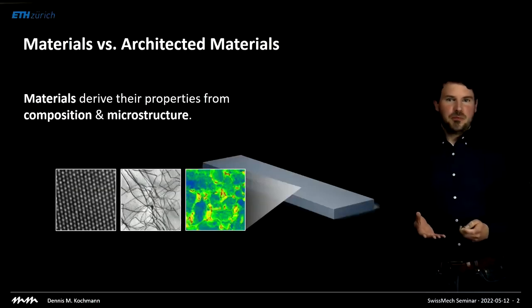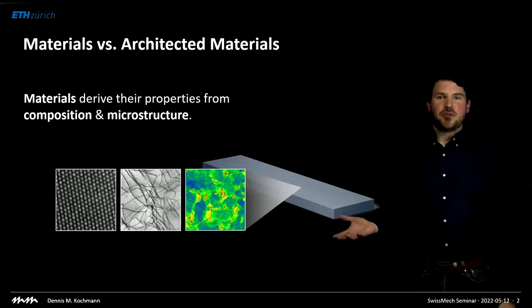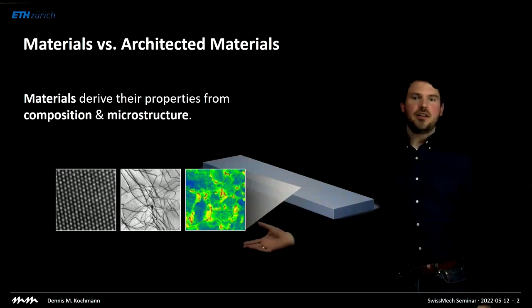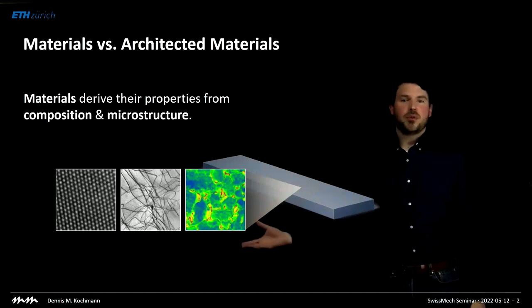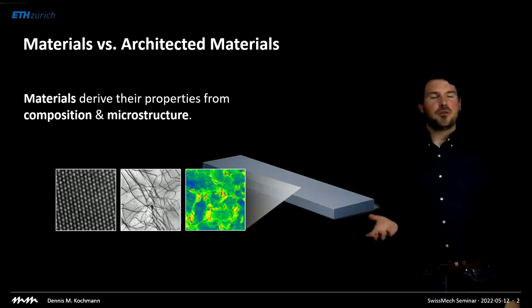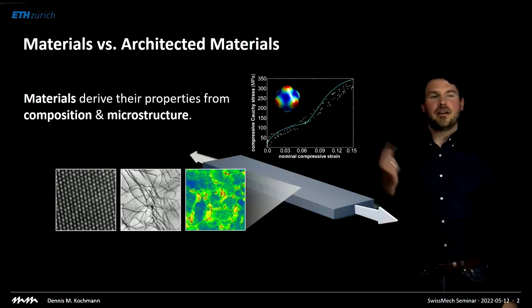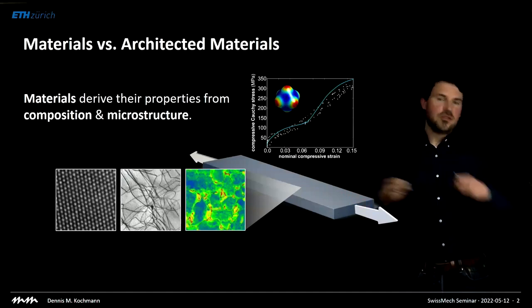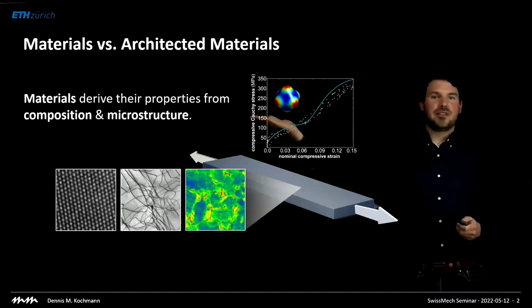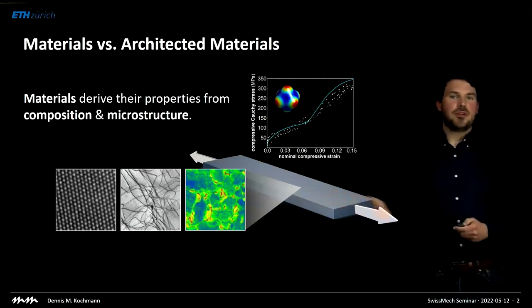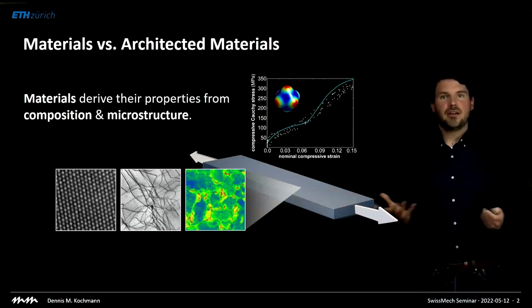What are architected materials? Materials as we know them classically derive their properties from composition and microstructure. If you zoom into lower scales you will find grain networks, dislocations, or polymer chains, and these small-scale compositional and microstructural features give rise to micro-scale properties. If you take your sample and pull on it you get mechanical properties — stress-strain data or Young's modulus, the stiffness — and if you map it in all directions we call this the stiffness map. There is a key relation between microstructure and properties as we know it from undergrad mechanics and materials classes.